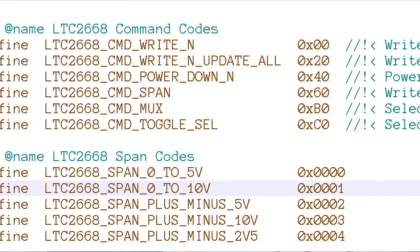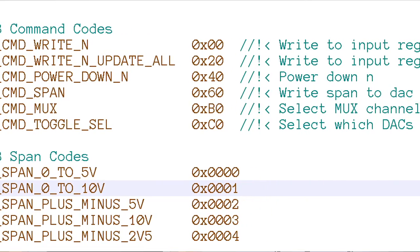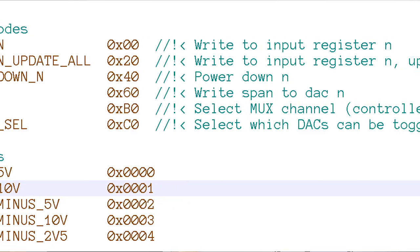There are also utility functions that translate voltages to DAC code values and vice versa. Finally, the top-level demonstration program lets you test out the library functions with a simple terminal interface. Once you get a feel for the library, you can move on to your own firmware.